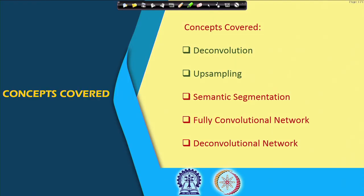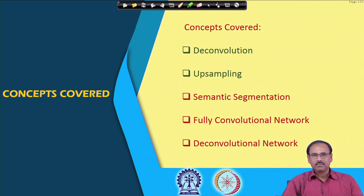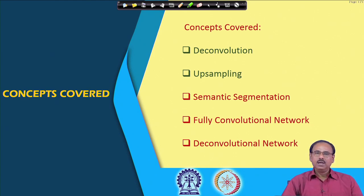In today's lecture, we will talk about the semantic segmentation problem and discuss two particular approaches: one called fully convolutional network based semantic segmentation, and the other called deconvolutional network based semantic segmentation. But before going into those approaches, let us first understand what image segmentation and semantic segmentation mean.